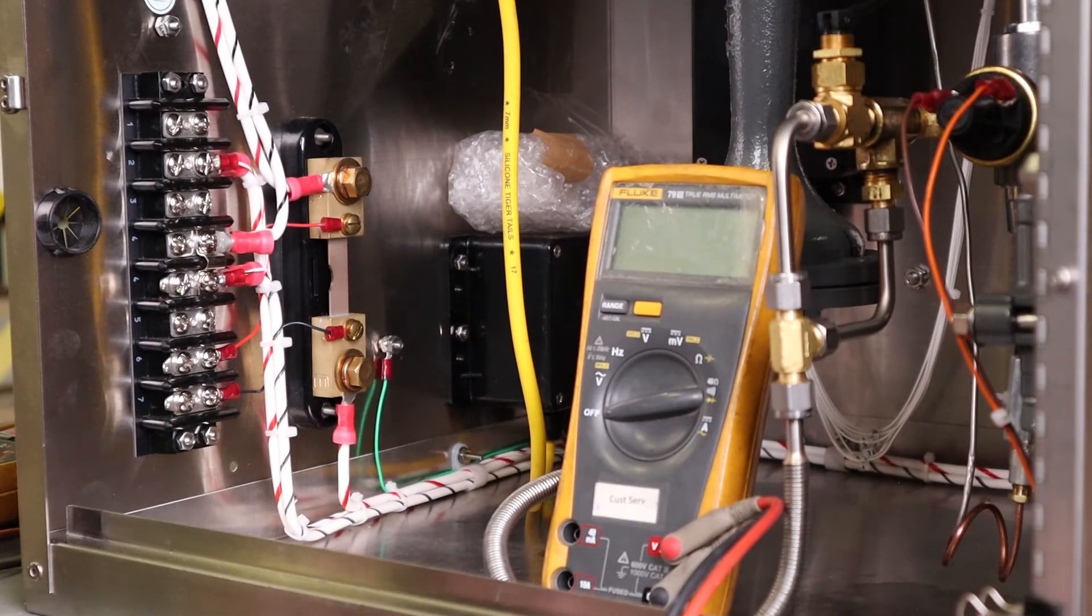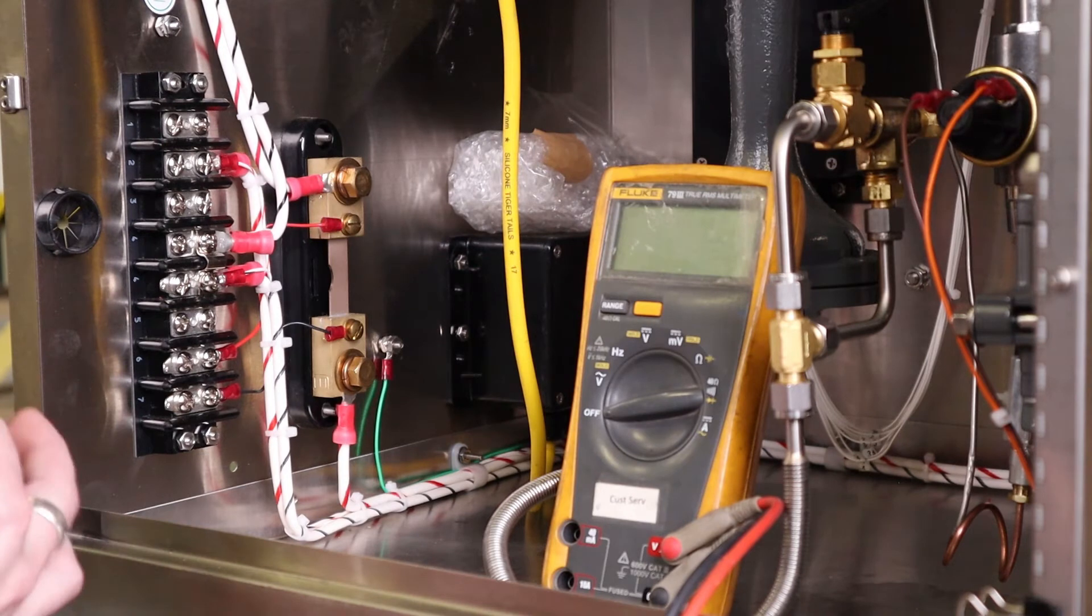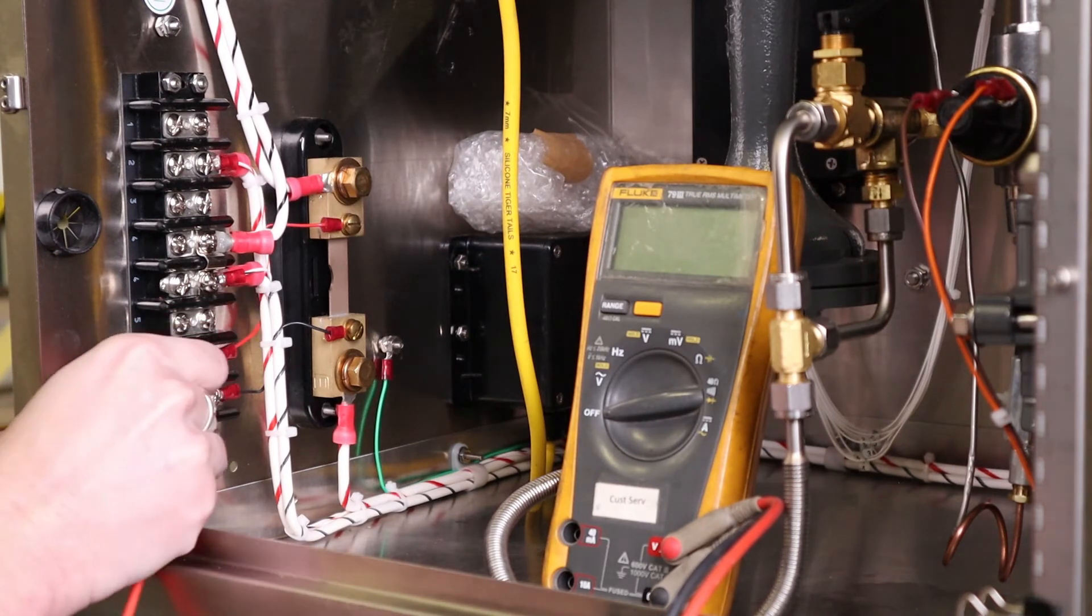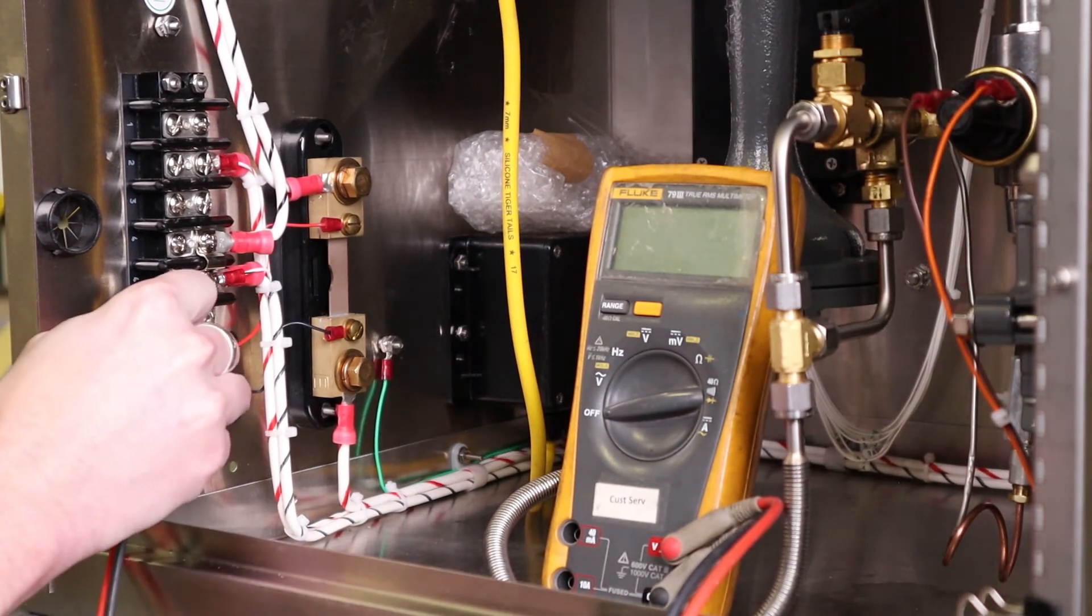Then you want to connect your digital multimeter to terminals 6 and 4 on TB1. This will measure your power unit voltage.